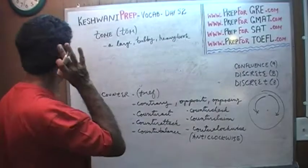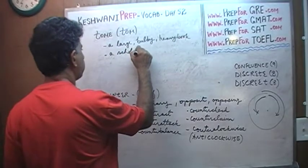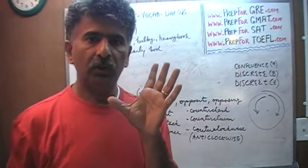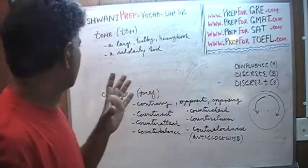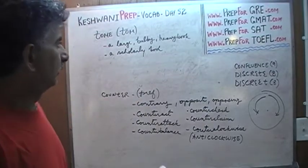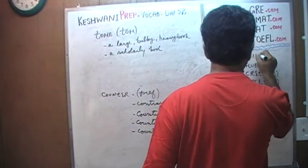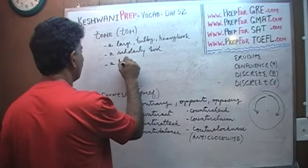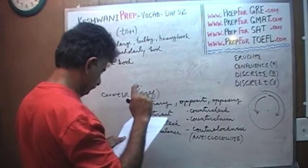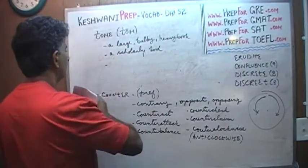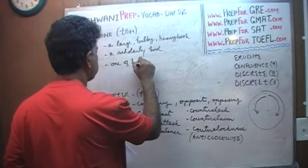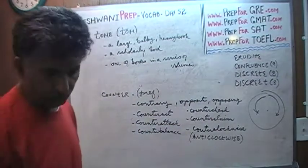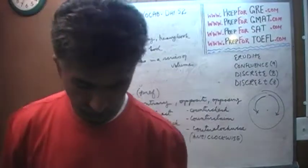A tome can also be a scholarly book — one that is erudite, very difficult to understand. When you say a 'heavy book,' heavy could be literal, because it's a large, bulky book, or it could be metaphorical — a scholarly book. It could also refer to one of the books in a series of volumes. If there are 15 volumes, each one — usually thick — would be referred to as a tome.